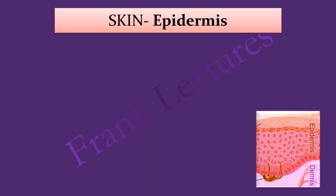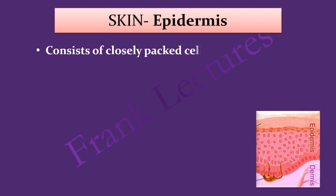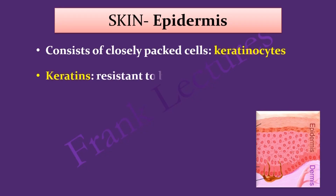The epidermis is the outer, thinner portion of the skin, and is in direct contact with the external environment. The epidermis consists of closely packed cells known as keratinocytes. Keratinocytes produce keratins, which are insoluble proteins resistant to bacterial enzymes and toxins, thus providing defense against bacteria.